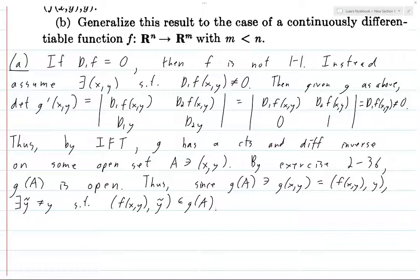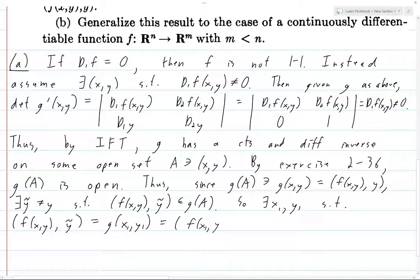Okay, so (f(x,y), ỹ) is in g(A). So if it's in g(A), then it's the image of some point under g. So this means that there exists some (x₁, y₁) such that (f(x,y), ỹ) is precisely equal to g(x₁, y₁). But what's the formula for g(x₁, y₁)? It's f(x₁, y₁) and then y₁.